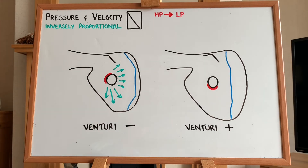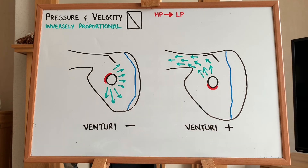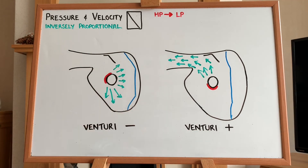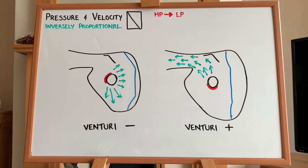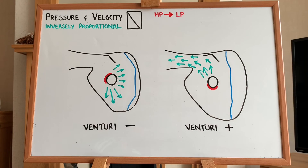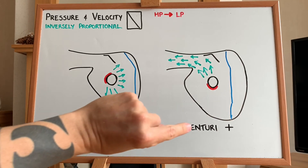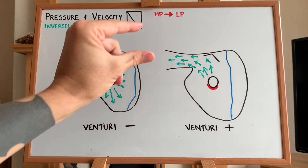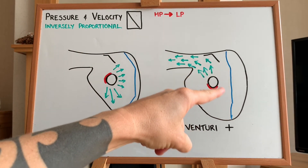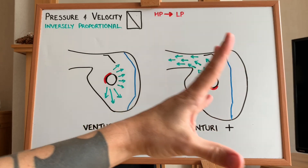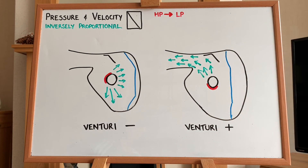If we then crank the Venturi to the plus setting and open it up, it manipulates the flow of gas inside the regulator. Instead of distributing gas in all directions, it aims everything towards the diver's mouth. Using a deflector shield inside the regulator, all of the gas moves in the same direction — higher velocity, lower pressure — which means pressure is higher on the other side. That high pressure wants to move toward the low pressure, helping the diaphragm flex in and aiding ease of breathing. This is the Venturi effect.